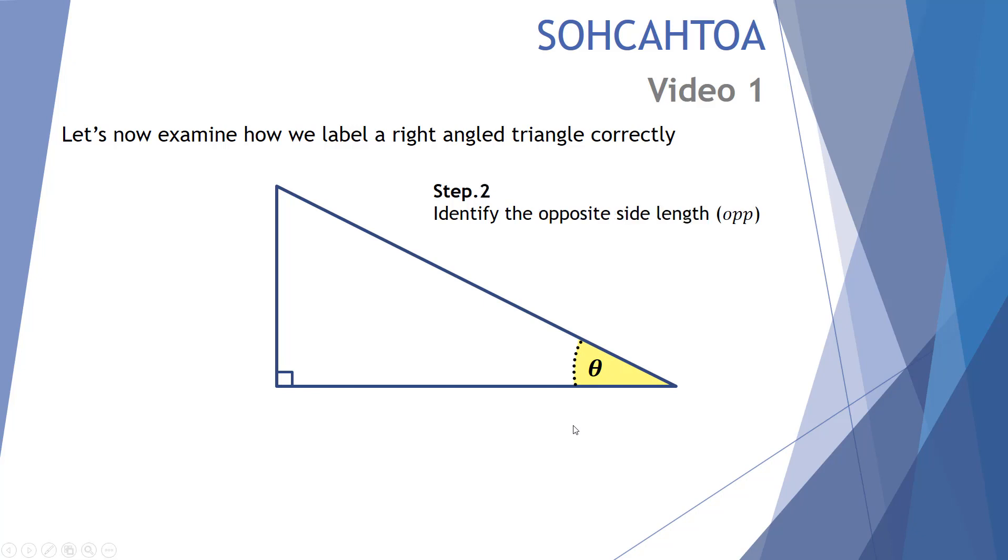Step two: identify the opposite side length. Now that might seem common sense to most people, but some students do get tricked on this. So to do this, let's identify the two side lengths of the triangle that make up the angle.